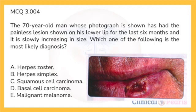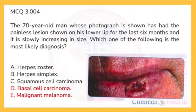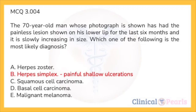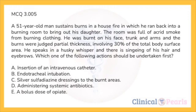Next: a 70-year-old man has had a painless lesion on his lower lip for the last six months, slowly increasing in size. Which is the most likely diagnosis? A: herpes zoster. B: herpes simplex. C: squamous cell carcinoma. D: basal cell carcinoma. E: malignant melanoma. The lesion is characteristic of squamous cell carcinoma — C is the answer. On the lips, they are found on the mucosa of the lower lip related to solar exposure. BCC and malignant melanoma rarely involve the lip mucosa. Herpes zoster gives clusters of vesicular eruptions related to cranial nerves 5 and 7. Herpes simplex of the lip gives a classical painful shallow ulcerated acute lesion, usually self-limiting.